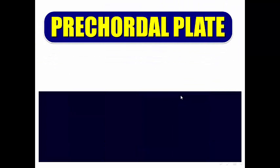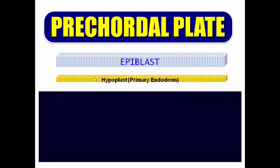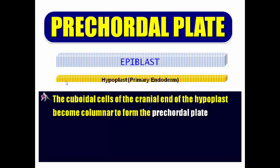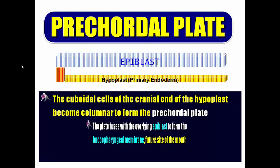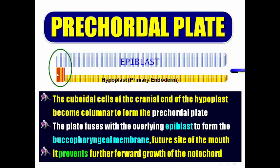Starting with the pre-chordal plate: the cranial end of the hypoblast becomes columnar — the cuboidal hypoblast cells become columnar. This pre-chordal plate fuses with the epiblast to form a membrane called the buccopharyngeal membrane, which is the future oral cavity. The pre-chordal plate also prevents forward growth of the developing notochord.